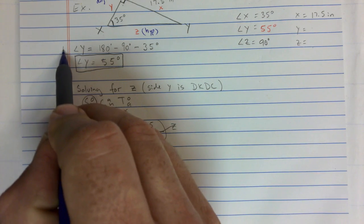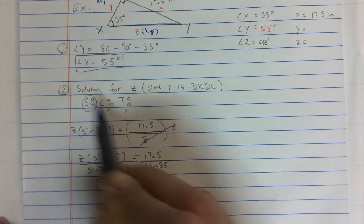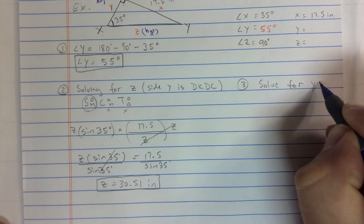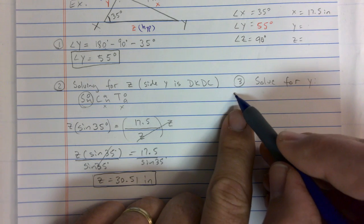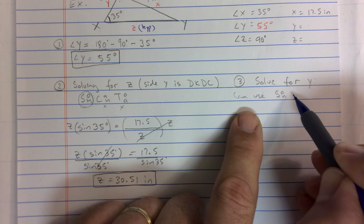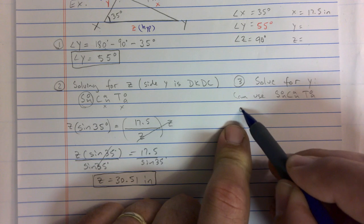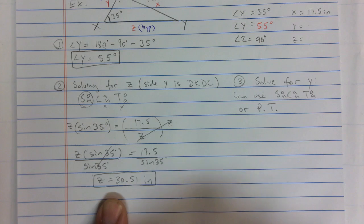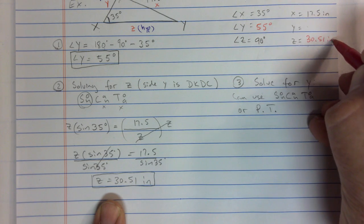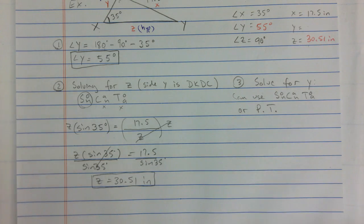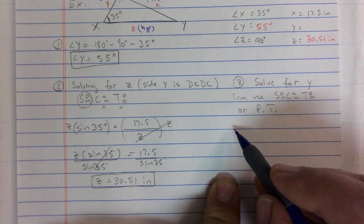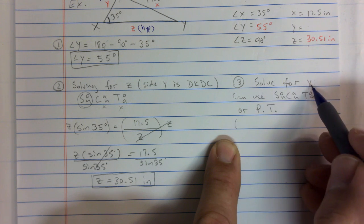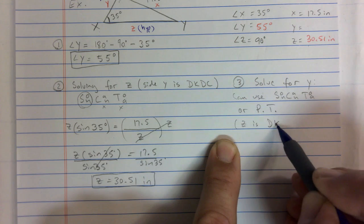So step one finds angle Y, step two solves for Z. Step three is to solve for Y. You can choose to use SOHCAHTOA again or the Pythagorean theorem, because now you have two sides. This is 30.51 inches — now that you have two sides, you can use the Pythagorean theorem to solve for Y.